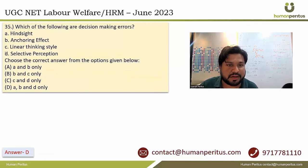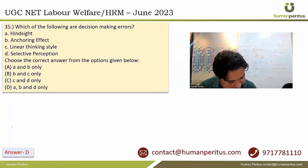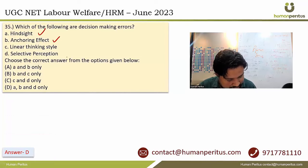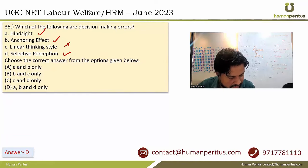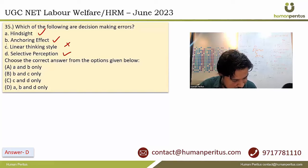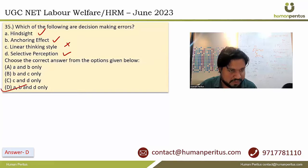Which of the following are decision-making errors? There are many decision-making errors: hindsight, anchoring effect, and selective perception. Linear thinking is not a decision-making error. So the correct answer includes A, B and D, which is option B.